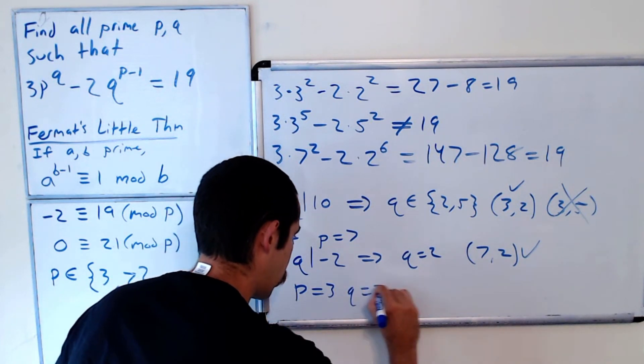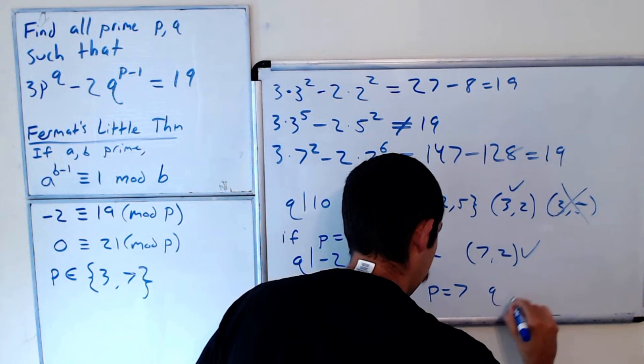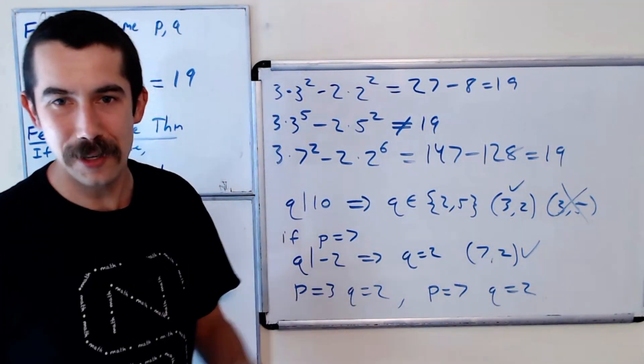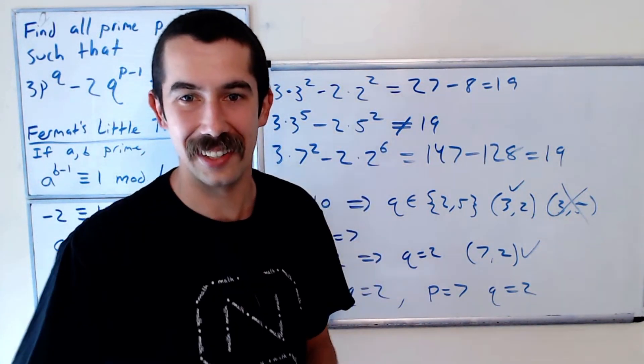So there's two possible answers: p equals 3, q equals 2, or p equals 7, q equals 2. And that's it. So let me know if you solved it and let me know if you like this video. See you later, thanks for watching.